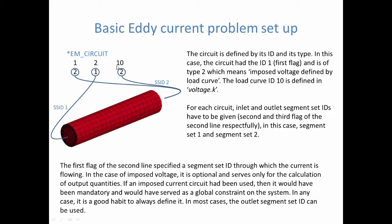So for each circuit, you have to give an inlet and an outlet, segment ID, basically our plus and minus sign. So in our case, if you look at the mesh, those are going to be ID number 1 and ID number 2.